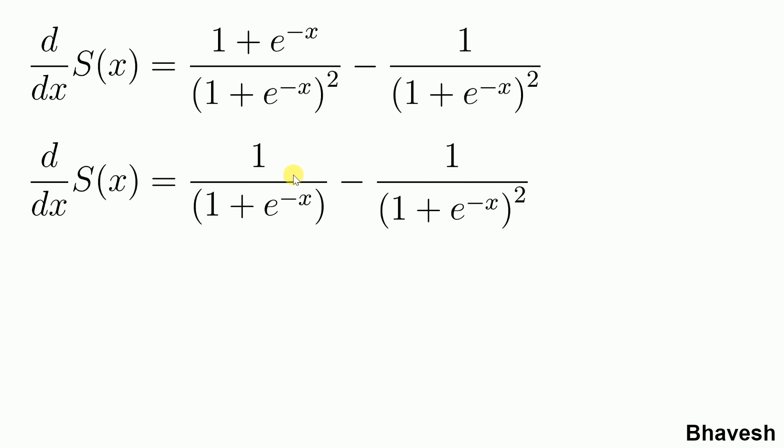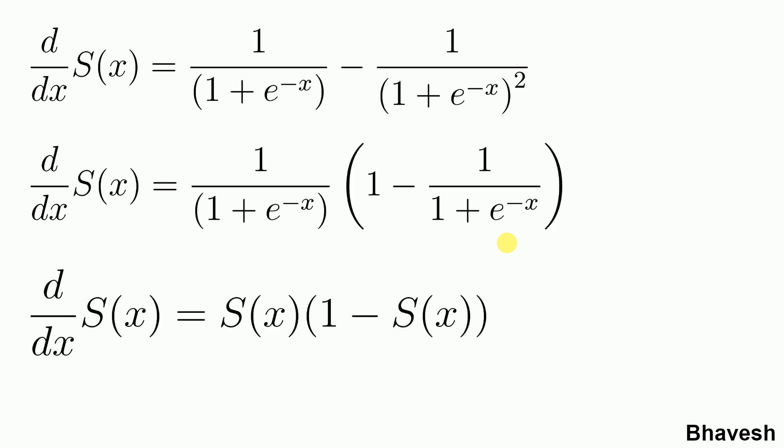Now the next thing that I do is I take this term as it is and I remove whatever is common within inside a bracket. What I mean to say by that is I have 1 upon 1 plus e to the power minus x outside into 1 minus that is this term as it is, minus 1 upon 1 plus e to the power minus x. If you look closely we started off with a sigmoid function s of x which was 1 upon 1 plus e to the power minus x. So essentially after doing all of these small manipulations we've reached the derivative form of the sigmoid function which is of the form s of x into 1 minus s of x.